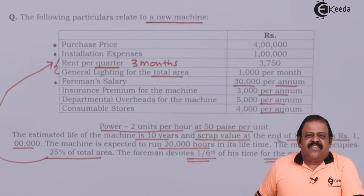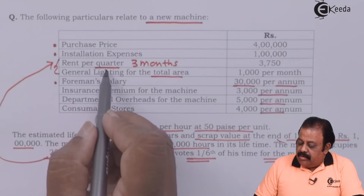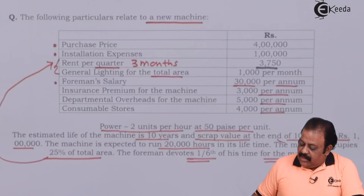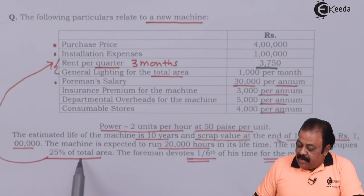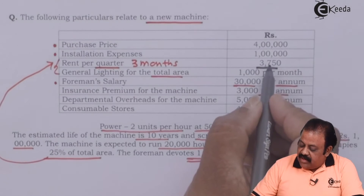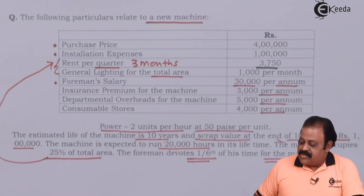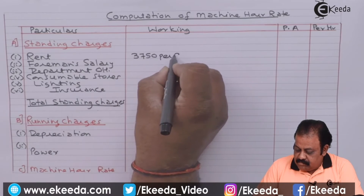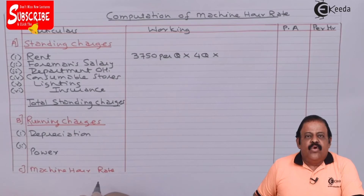We are required to classify all expenses into standing charges and running charges. First, rent per quarter is given as 3,750 and the machinery occupies 25% of the total area. This is quarterly rent, so we convert it to per annum: 3,750 multiplied by 4 quarters, then multiplied by 25%, giving 3,750 per annum for this machine.